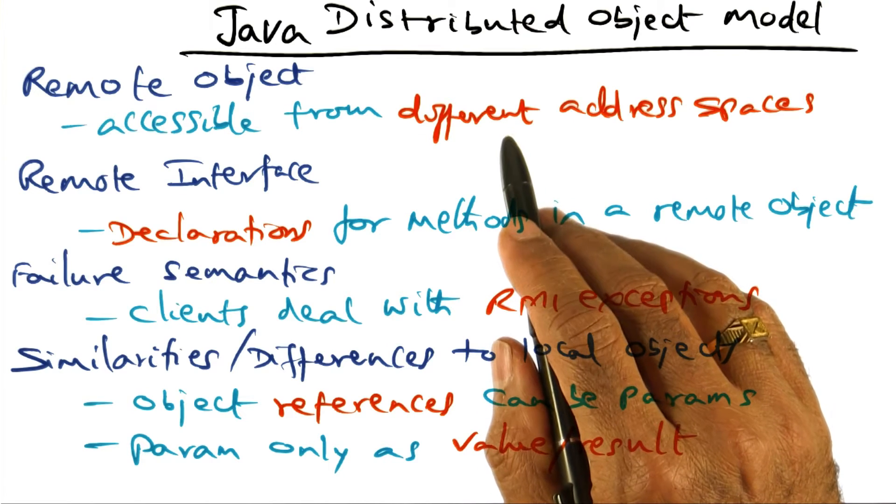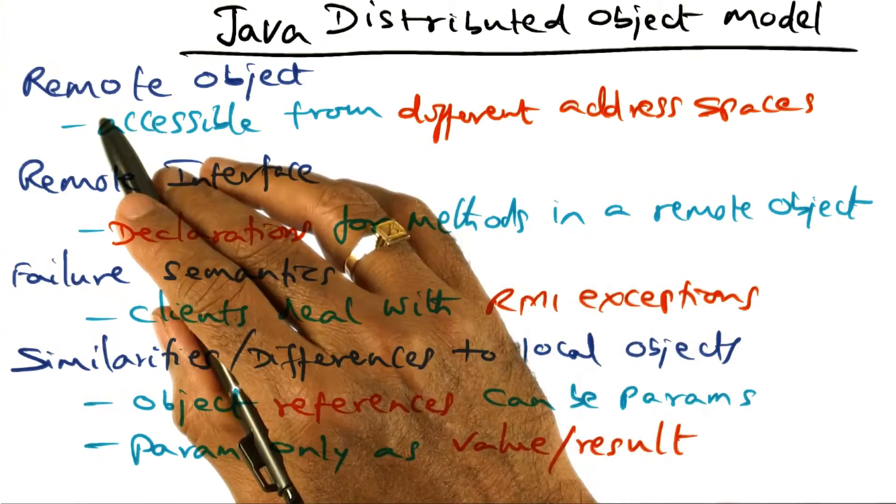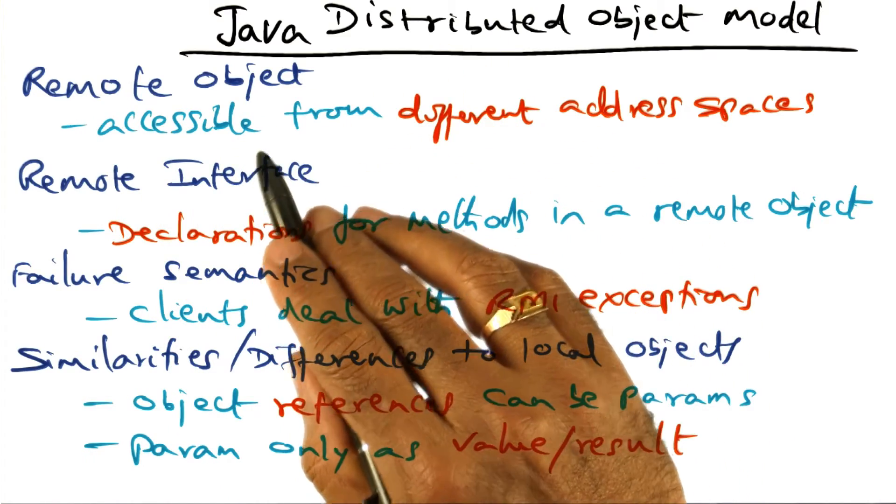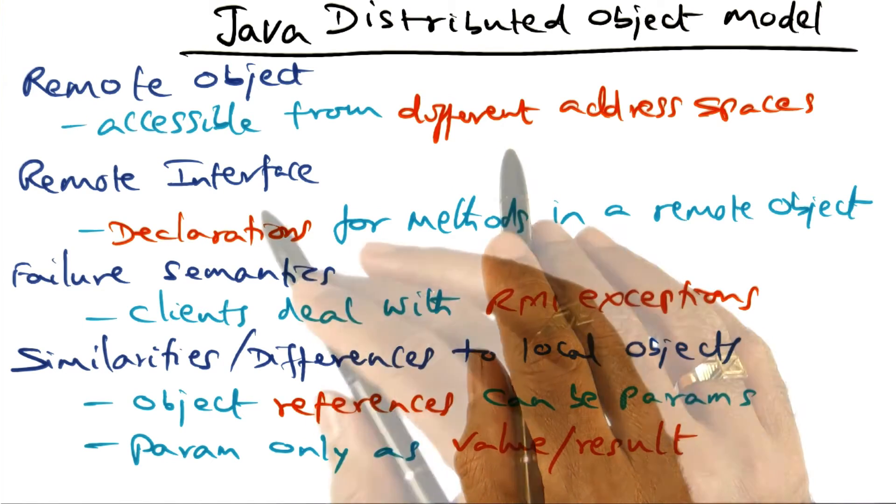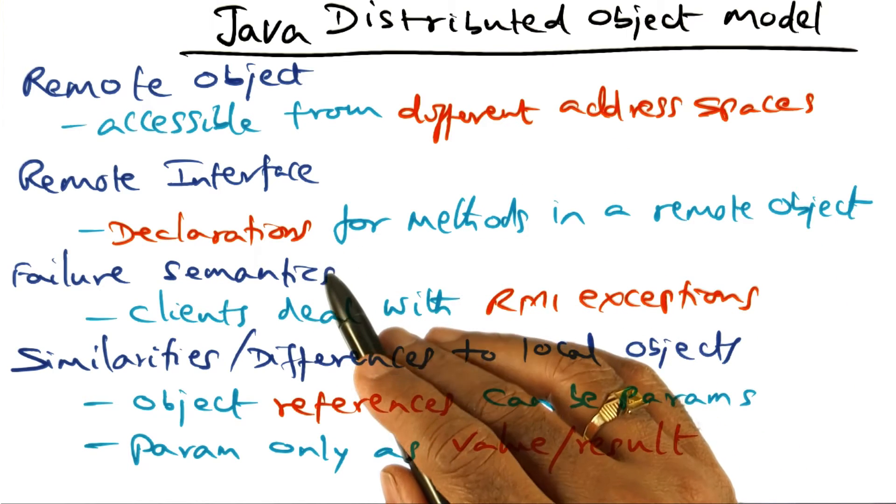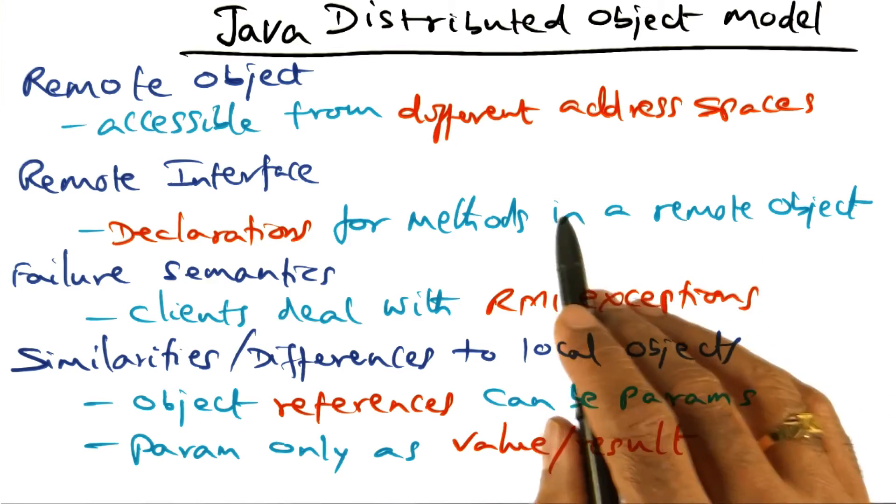Before we dig deeper, let me give you at a high level the distributed object model of Java. The term remote object in the object model of Java refers to objects that are accessible from different address spaces. And the term remote interface is used in the distributed object model to say what are all the declarations for methods in a remote object.